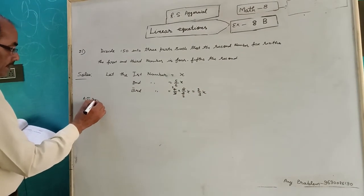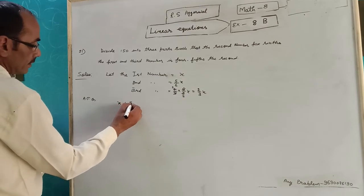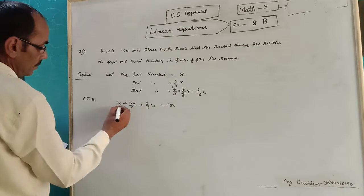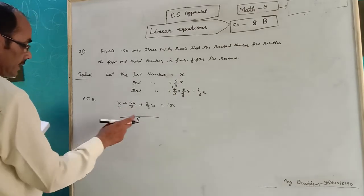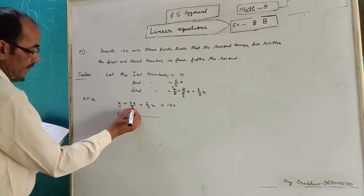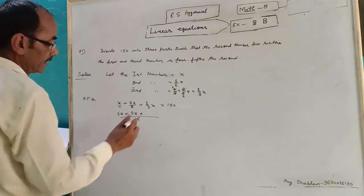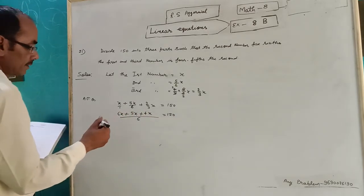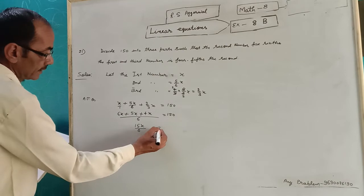According to question, all number sum is 150. x plus 5x upon 6 plus 2 upon 3x is equal to 150. Take the LCM. 3 and 6, LCM is 6. 6 divided by 1 is 6x plus 5x. 6 divided by 3, 2 to the 4, 4x is equal to 150. After plus, 15x upon 6 is equal to 150.